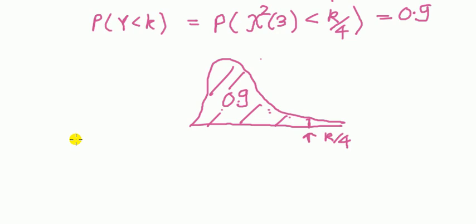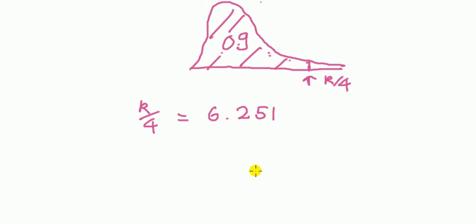And this value here, what we're looking for is k over 4. If you look up in the chi-squared table with 3 degrees of freedom, you will find that k over 4 equals 6.251. If you don't know how to do this bit, look back at one of my videos on how to read the chi-squared table. Therefore k is equal to about 25. Finished.